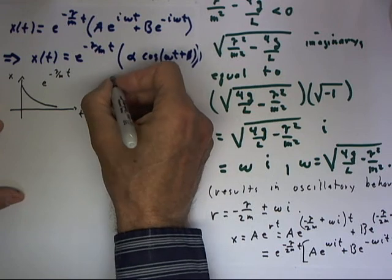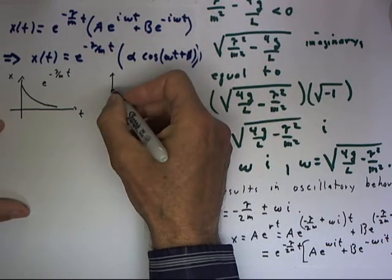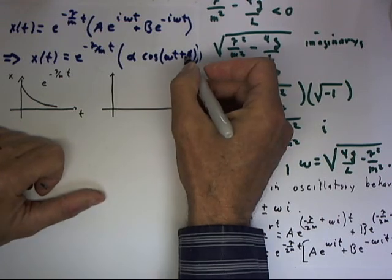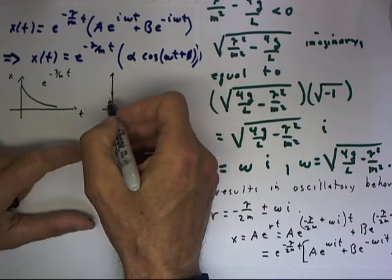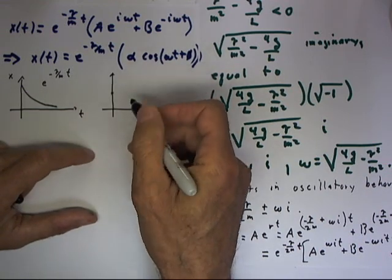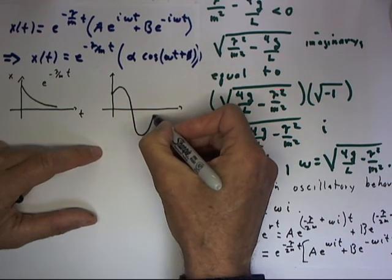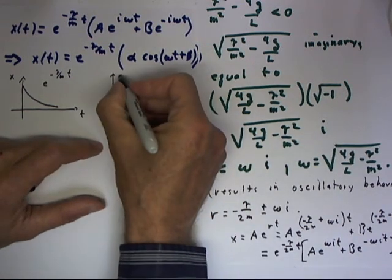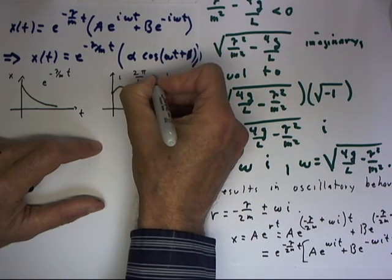Our graph of alpha cosine of omega t plus phi is just a cosine function or sine function. It's just an oscillatory function. By choosing phi and a, we can start at any point on the vertical axis with any phase. So that this might just look something like this.